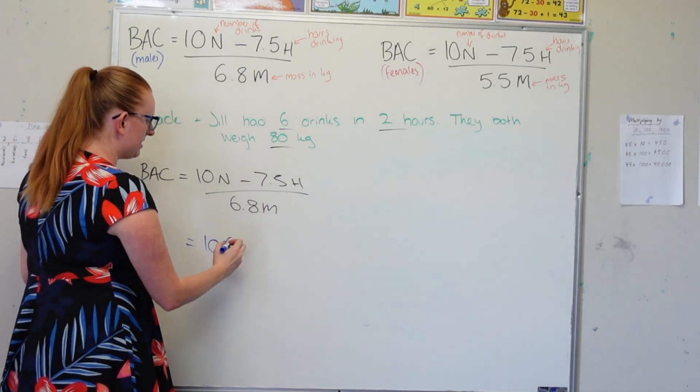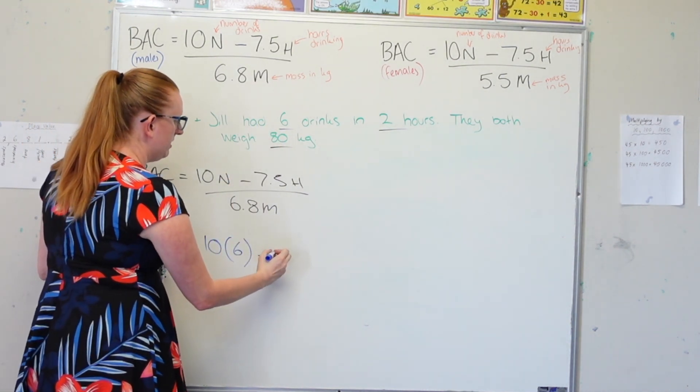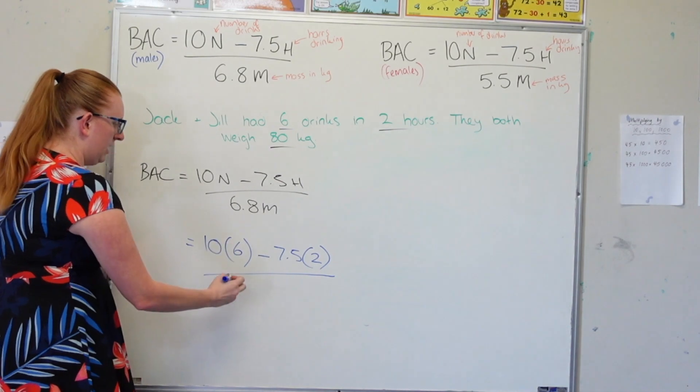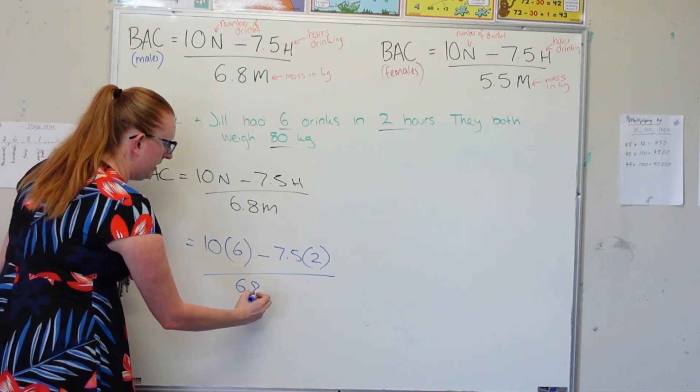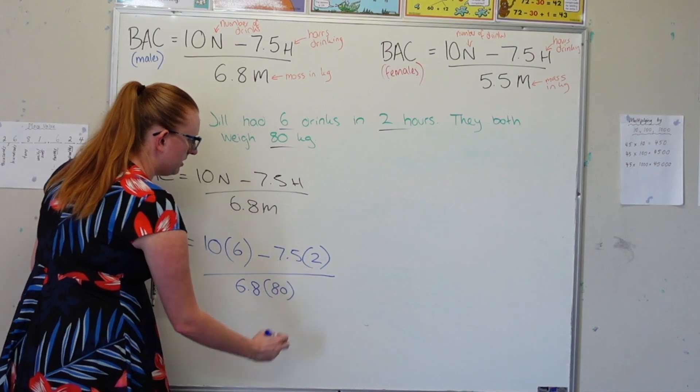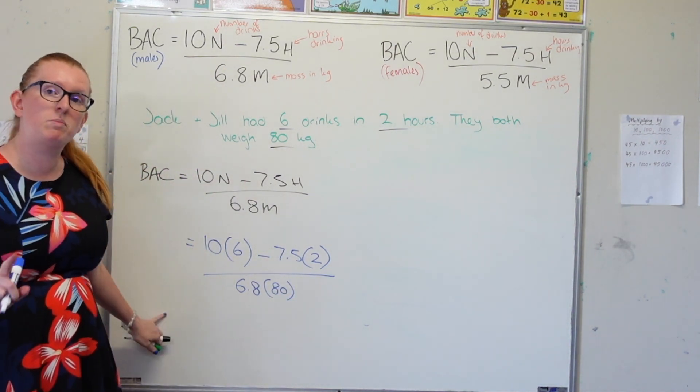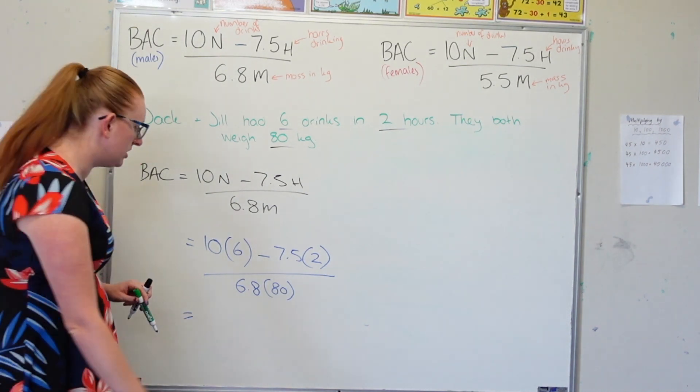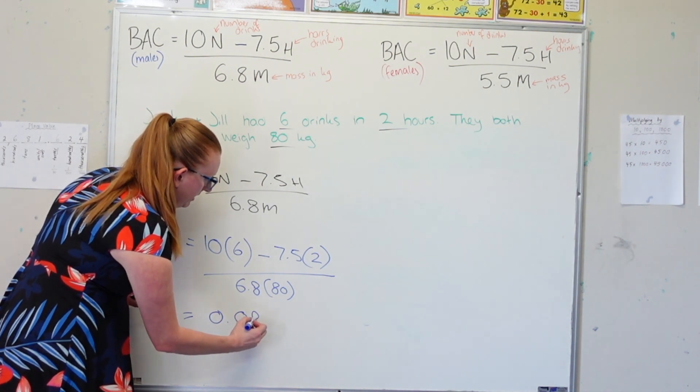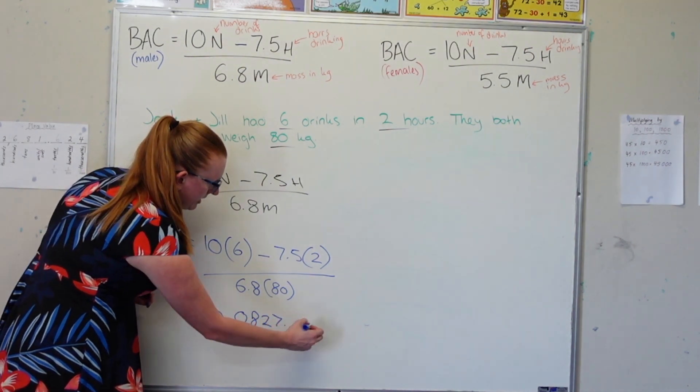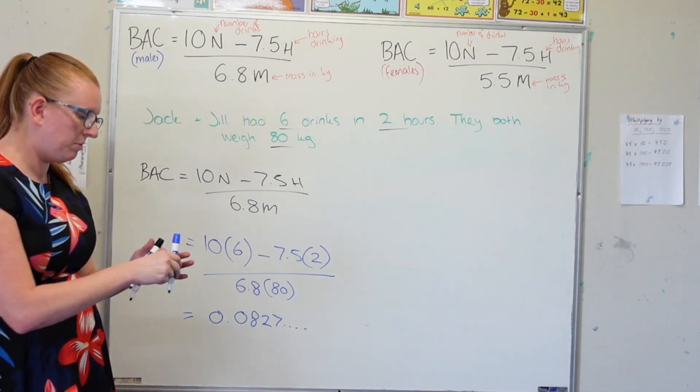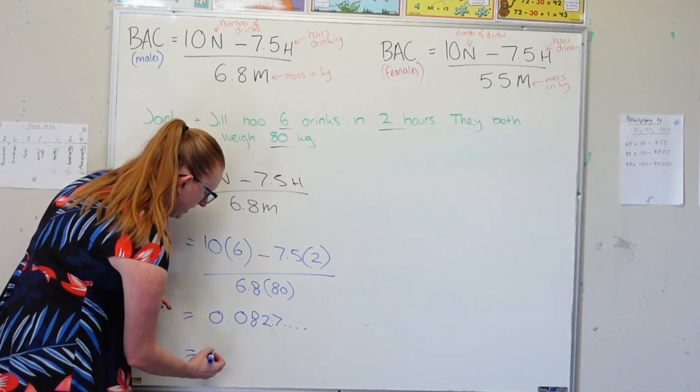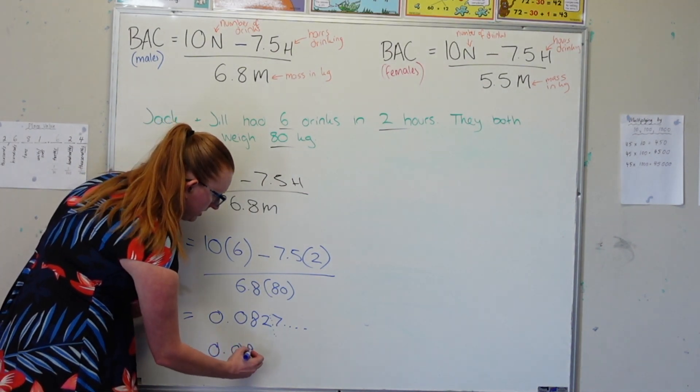So 10N, the number of drinks, is 6, minus 7.5H is 2 because he spent two hours drinking, and then 6.8, and his body mass is 80 kilos. So I'm going to type this entire thing into my calculator. And it is going to tell me that Jack's blood alcohol concentration is 0.0827. If I round it to three decimal places, I'm going to cut it here.